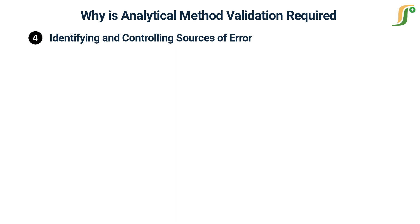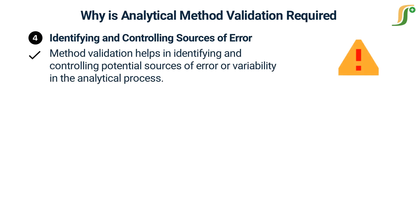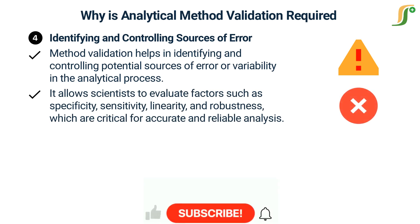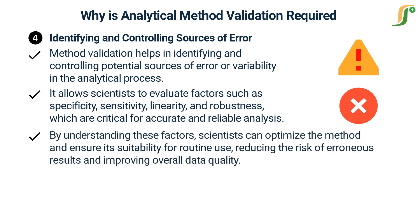Identifying and controlling sources of error: method validation helps in identifying and controlling potential sources of error or variability in the analytical process. It allows scientists to evaluate factors such as specificity, sensitivity, linearity, and robustness, which are critical for accurate and reliable analysis. By understanding these factors, scientists can optimize the method and ensure its suitability for routine use, reducing the risk of erroneous results and improving overall data quality.